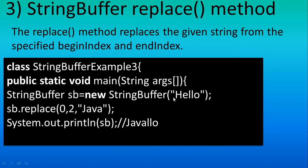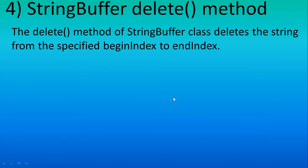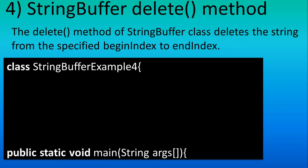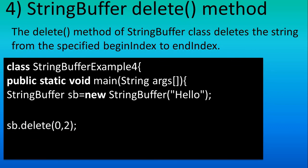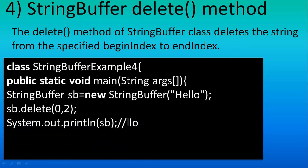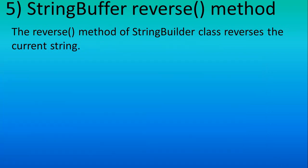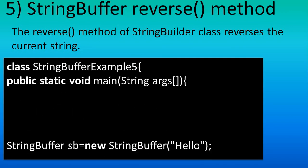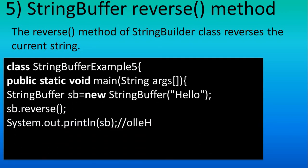Next is delete(). By the name you can guess — it deletes part of the string. Here 0 is the starting position and 2 is the number of characters, so 'h' and 'e' will be removed and you will get 'llo'. Then we have the reverse() method — you simply call it without any parameters and you get the reversed string. This is one of the easiest methods to use.